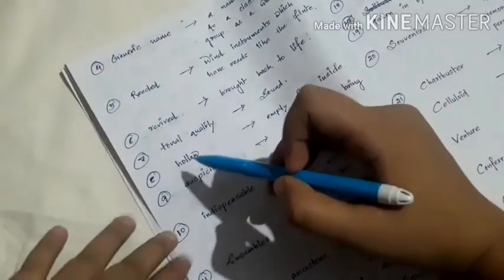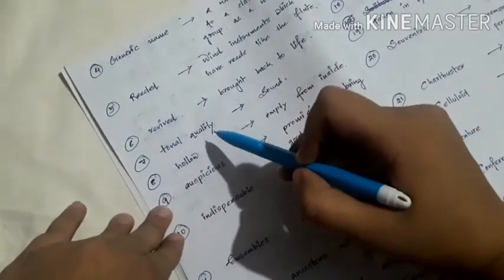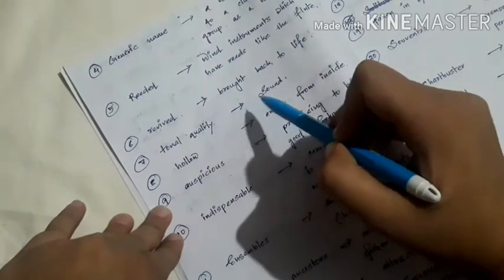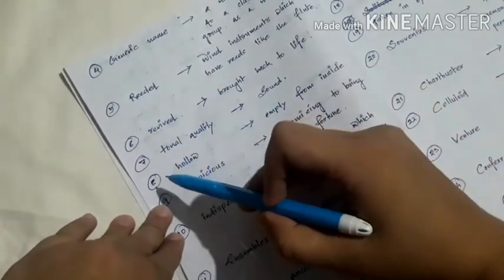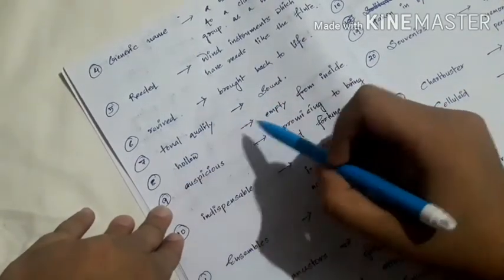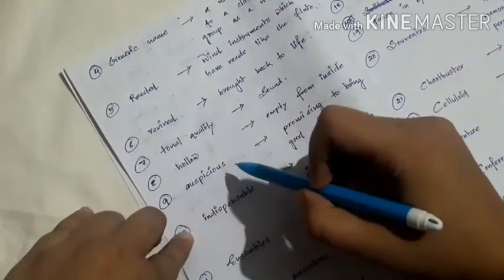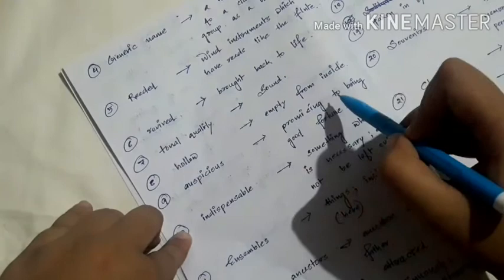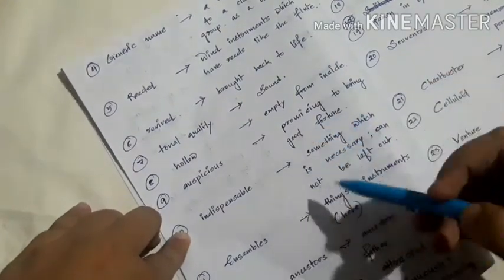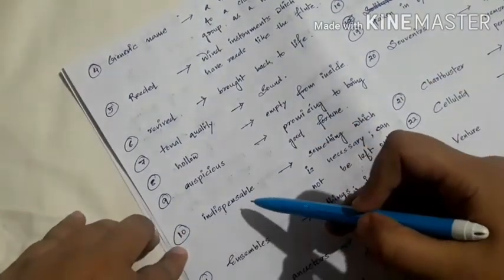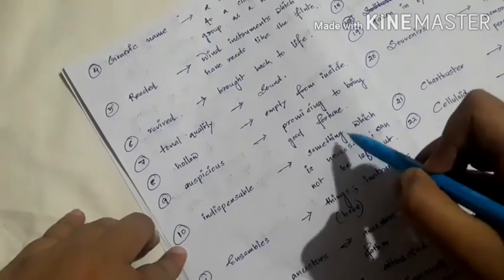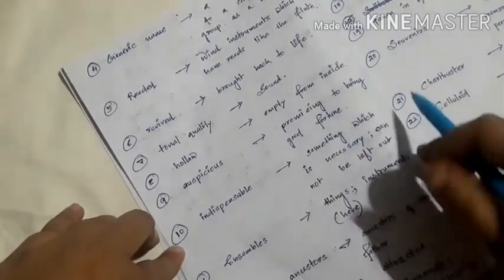Number eight, hollow, meaning empty from inside. Number nine, auspicious, meaning promising to bring good fortune. Number ten, indispensable, meaning something which is necessary or which cannot be left out.